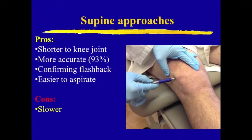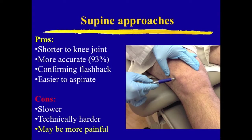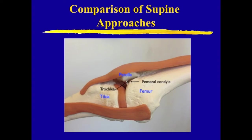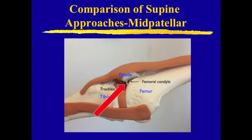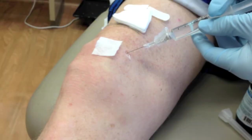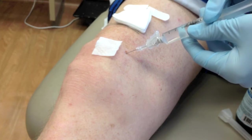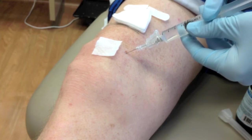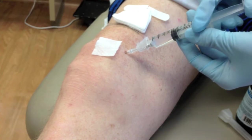The major cons of the supine approach are that it's slower due to patient positioning. It can also be more technically difficult for providers, especially if the patient has advanced arthritis with severe joint narrowing and osteophytic bony changes. For the same reasons, the supine approach can be more painful for patients than the seated approach. In general, the mid-patellar supine approach may be more difficult and painful than the suprapatellar approach, especially if the patient's knee is in slight flexion. If the mid-patellar space is small, injection attempts may even cause needle damage to the patellar and trochlear cartilage.